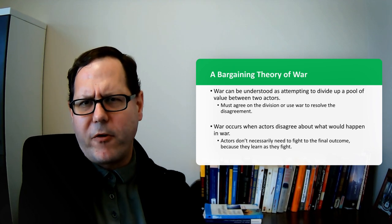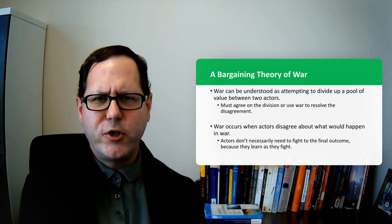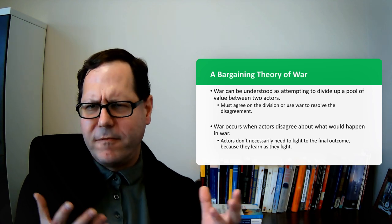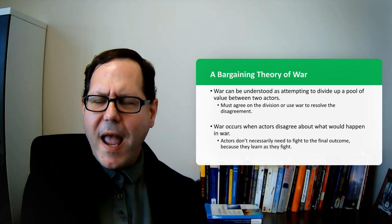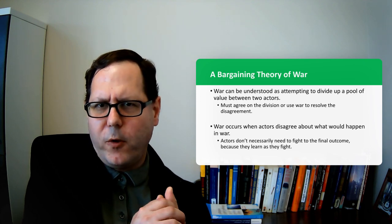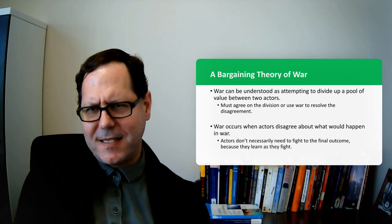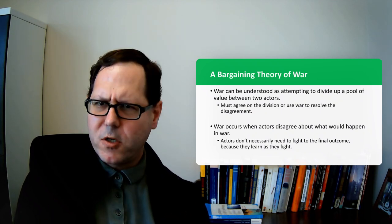The basic idea behind the bargaining theory of war is that there's something you're fighting over, an issue or a pie of value, and states have to figure out how to divide up that pool of value and split it between them. They have to agree on the division. I get half, you get half—that seems like a reasonable solution.